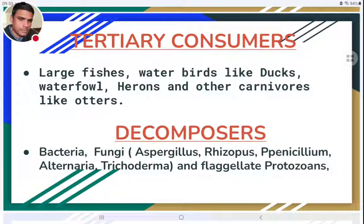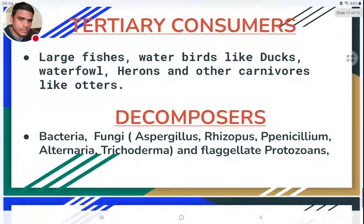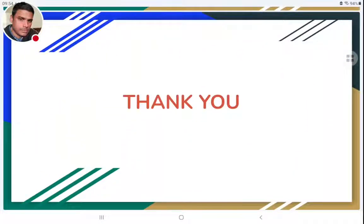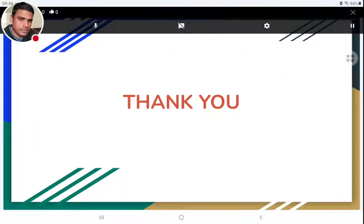Decomposers in lentic water ecosystems include different types of bacteria and fungi such as Aspergillus, Rhizopus, Penicillium, Alternaria, and Trichoderma, as well as some flagellate protozoa. These decomposers are present in the benthic zone of both ponds and lakes. This concludes the topic of lentic water ecosystems.